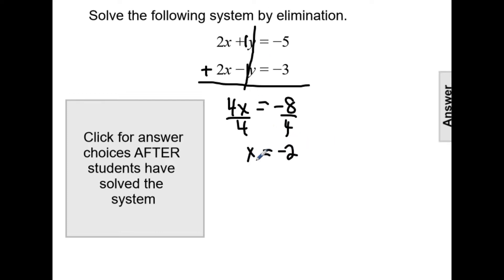Now that we have half our answer, x equals negative 2, I can substitute that into either of the original equations. I'm going to just randomly pick the first. So we'll write the original 2x plus y equals negative 5. So it'll be 2 times negative 2 plus y equals negative 5.